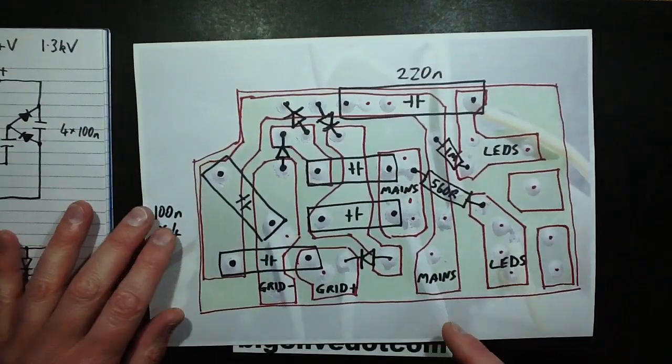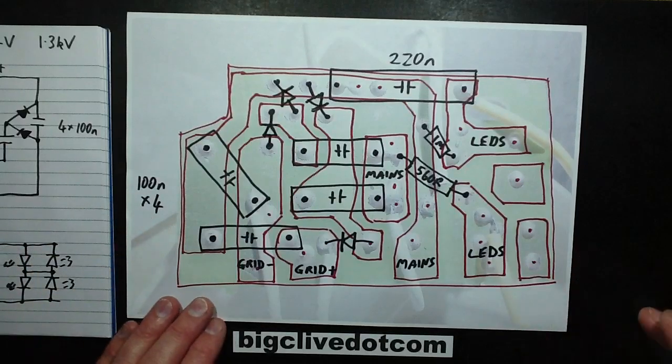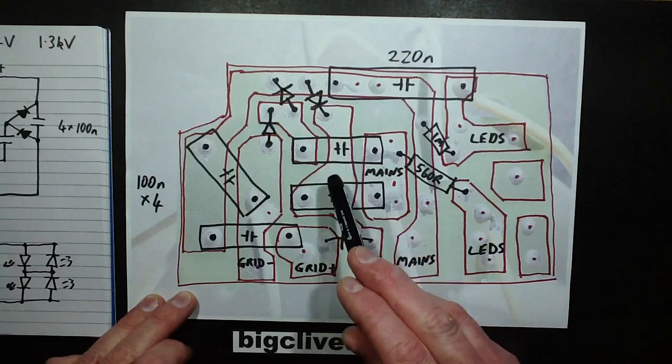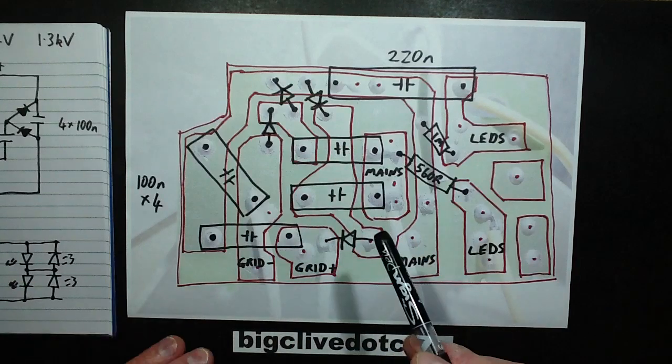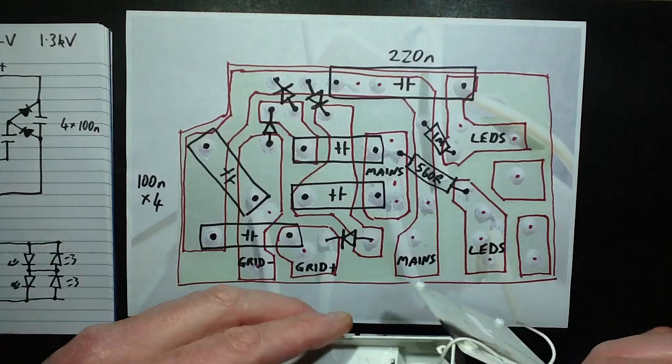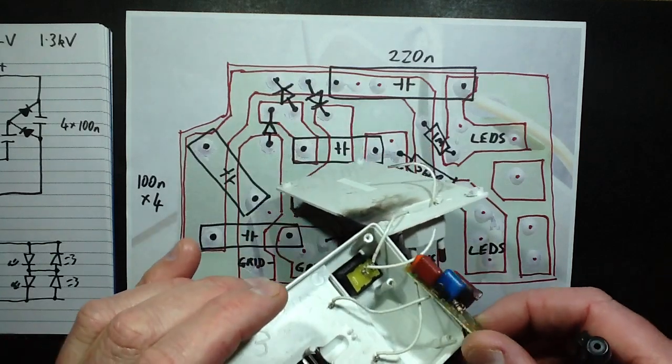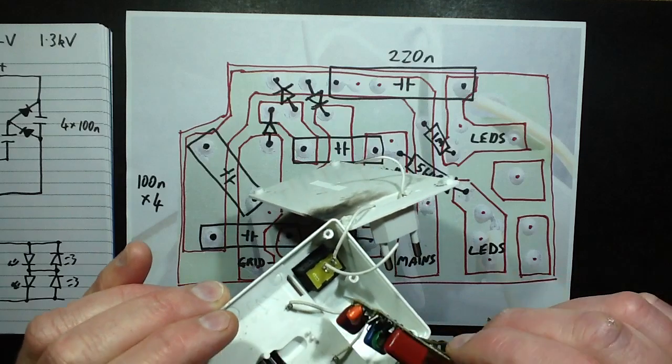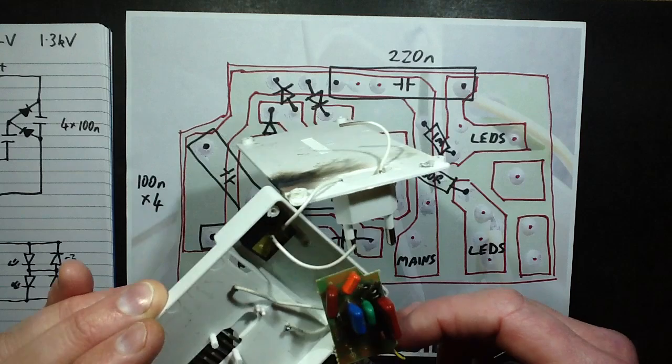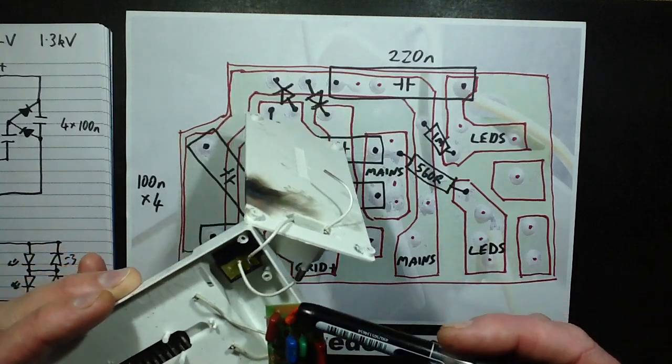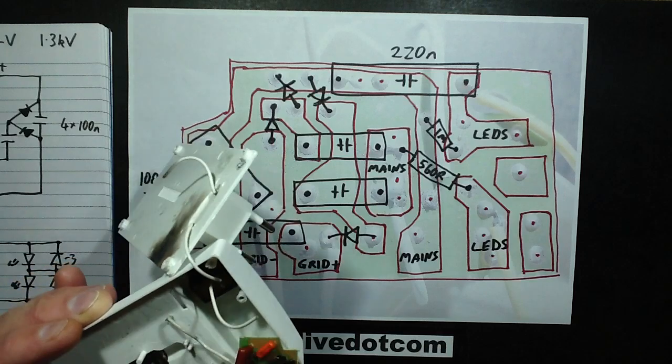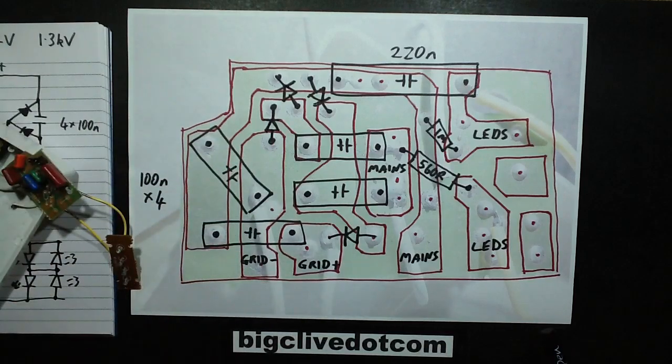Here we go, so it's one 220 nanofarad, four 100 nanofarad capacitors - the exploding ones - and four diodes which I'm guessing are 1N4007. That capacitor is most certainly not rated for 630 volts I shouldn't think at 100 nanofarad. Very odd indeed but quite amusing I have to say.